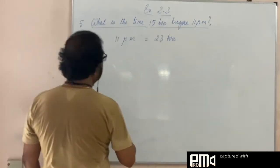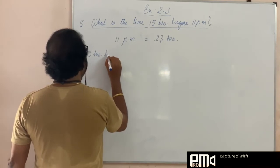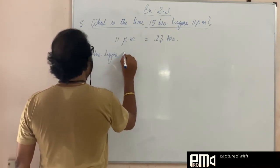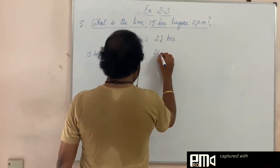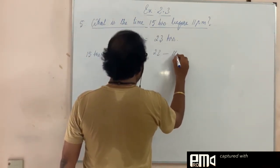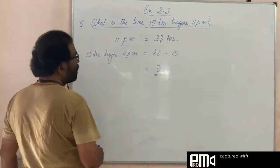So 15 hours before 11 p.m. means from 23 you subtract 15. How much? 8.